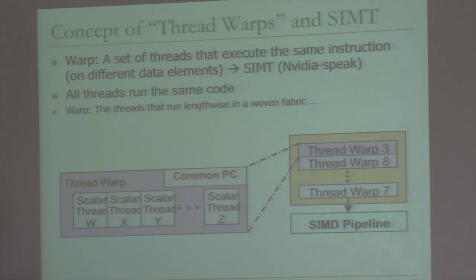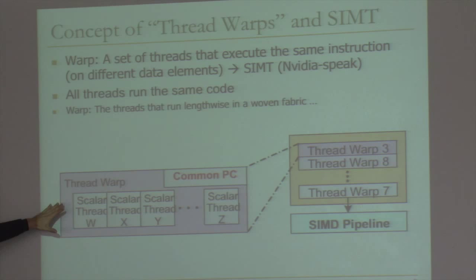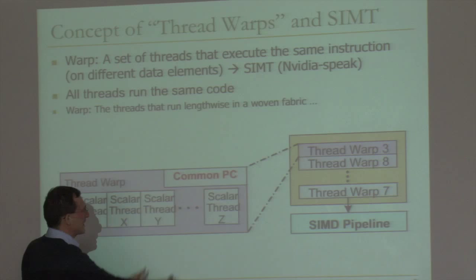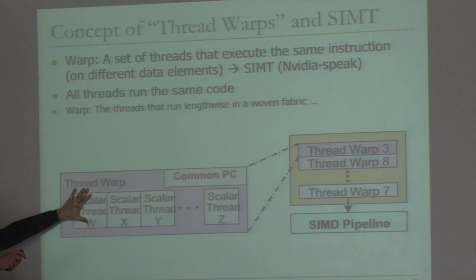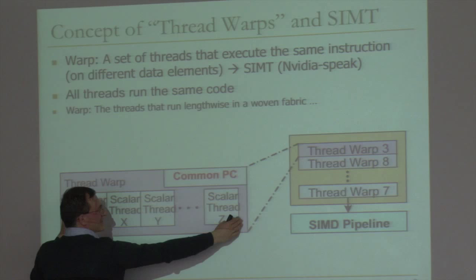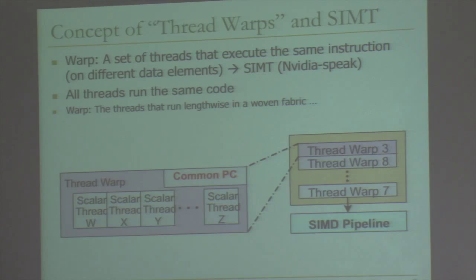Why is the terminology 'warp' nice? NVIDIA played with this — warp means the threads that run lengthwise in a woven fabric. You have these threads running in the pipeline together, all executing the same program counter in the same cycle. This is actually the dictionary definition of a warp. A warp is a set of threads that have the same program counter and are grouped together at the same time.